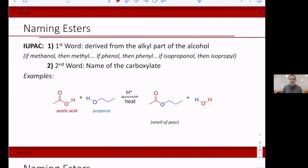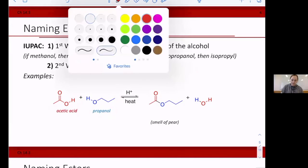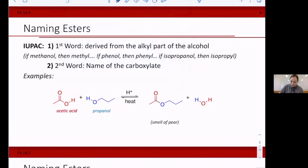And then the second word is the name of the carboxylate. So the carboxylic acid, turn that into the ate form, the carboxylate form. And then that's that second word. So here I have my propanol and I have acetic acid. So my first word comes from the alcohol that I started with, which was propanol.